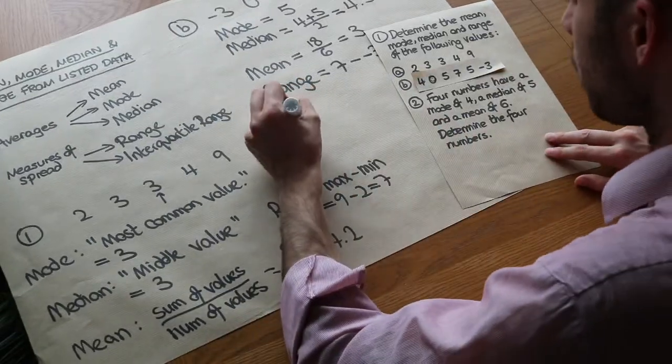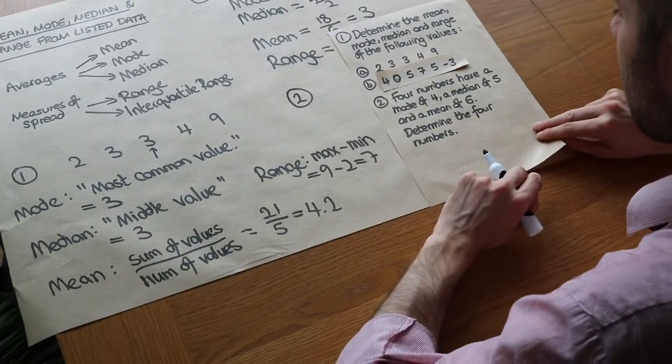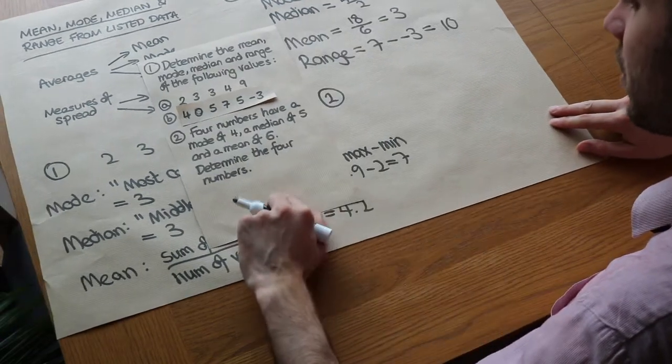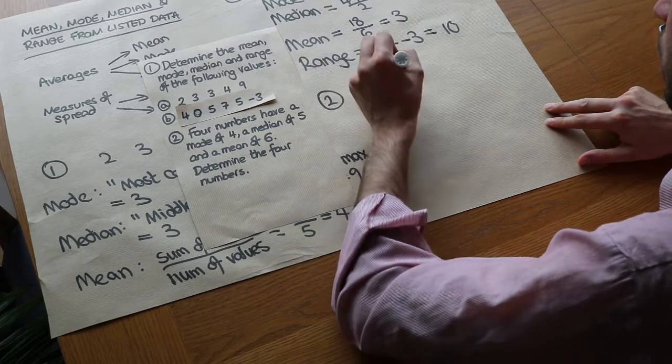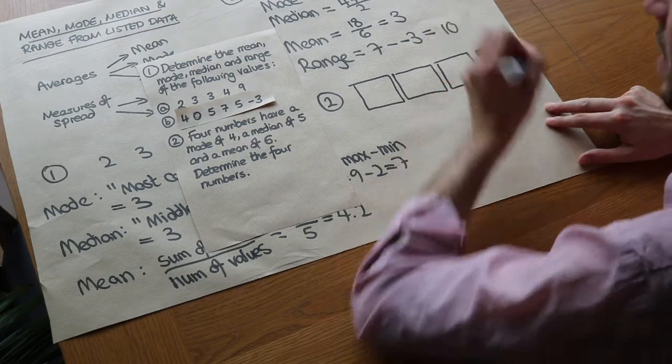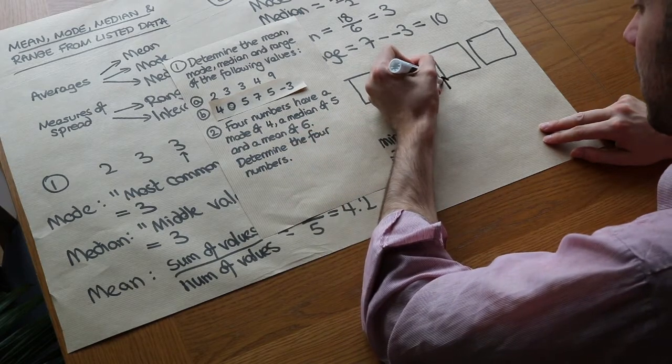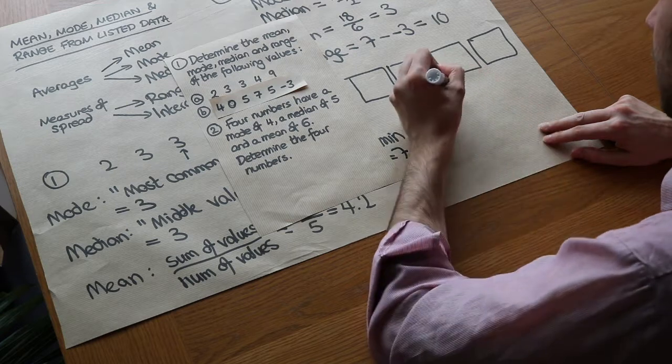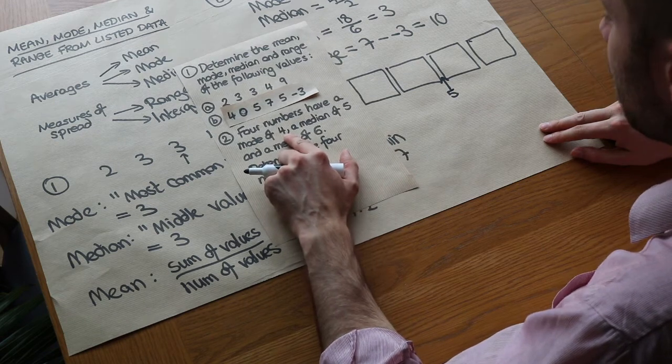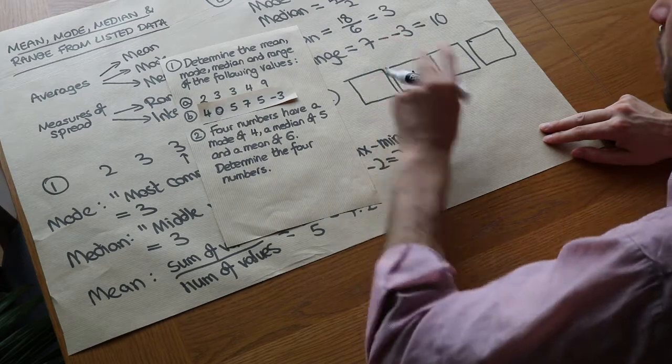Now we've got the second question here where we're given the averages and we have to find out what the numbers are. If 4 numbers have a mode of 4, a median of 5 and a mean of 6, determine the 4 numbers. What I like to do with this kind of question is to put 4 boxes to represent the 4 numbers. We're going to put our numbers in ascending order. We can see that they have a median of 5, so we know this middle point here halfway between the two middle numbers is 5. We can also see we have a mode of 4, so 4 must be the most common value. Since 4 is less than 5, to have a mode we require that both of these numbers, these bottom two, must be 4.